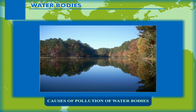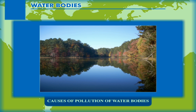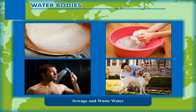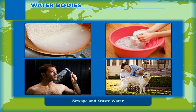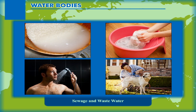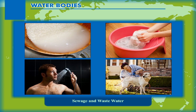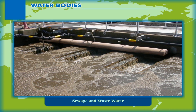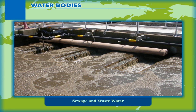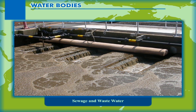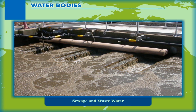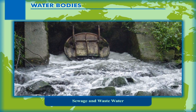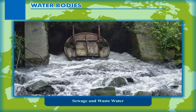Causes of Pollution of Water Bodies: Water pollution is mainly the result of human activities. Sewage: Every day we cook, do laundry, flush the toilet, wash our cars, shower, and do many things that use water. In many places, waste water and soluble waste called sewage is treated, cleaned, and dumped into the sea or river. Even though these are treated, they usually pollute fresh water.